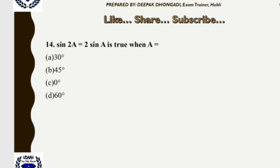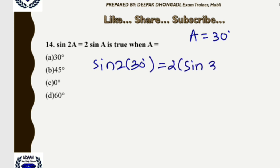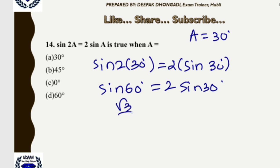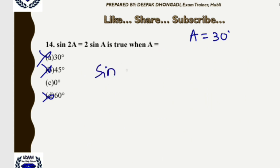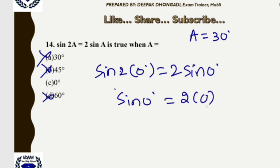Question 14: sin2A = 2sinA is true when A equals? Testing A=30°: sin60° = √3/2 but 2·sin30° = 1 — not equal. Testing A=45° and A=60° similarly gives inequalities. Testing A=0°: sin0° = 0 and 2·sin0° = 0, so 0=0. Only option C (A=0°) gives a true statement.